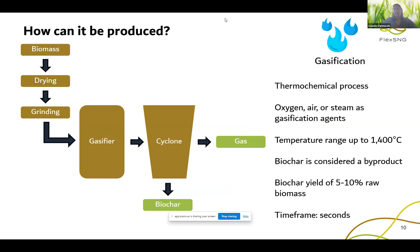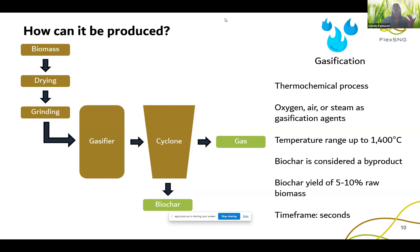Pyrolysis is the most common pathway for producing biochar right now. It is a thermal decomposition of organic materials in an oxygen-free environment, at a temperature range between 250 and 900 degrees Celsius, with a time frame of hours. It can be slow or fast, meaning slower or faster heating rates of the biomass. The pyrolysis process yields biochar at 10 to 30% of the mass of the biomass feedstock introduced.